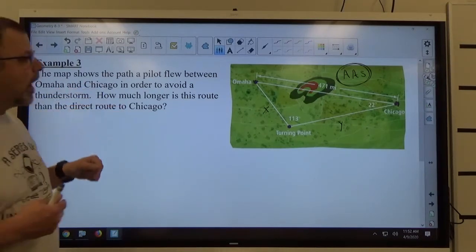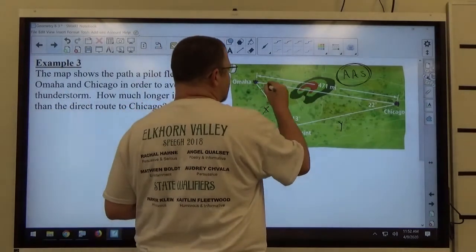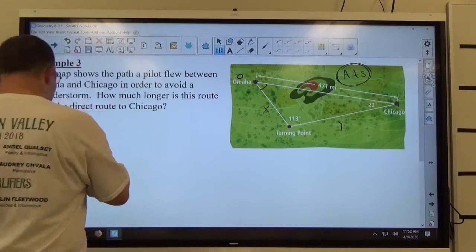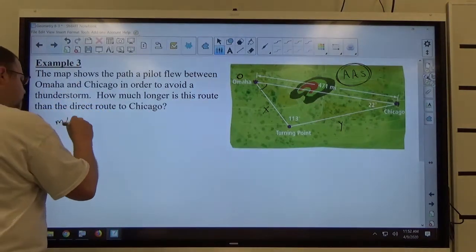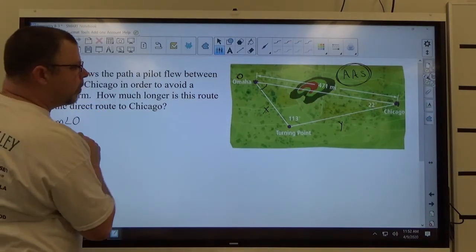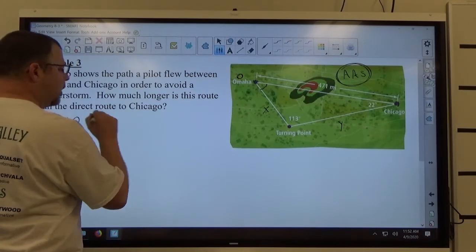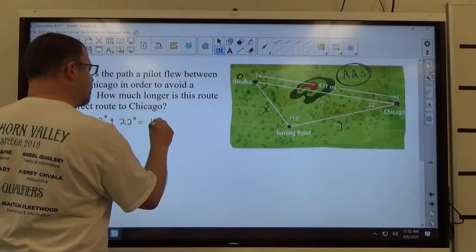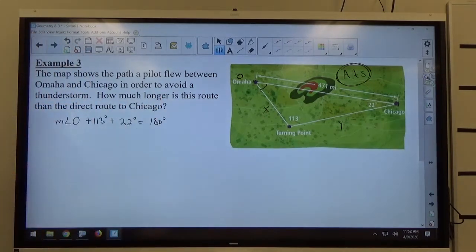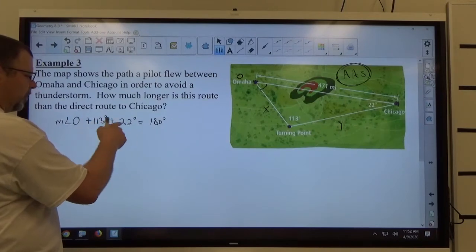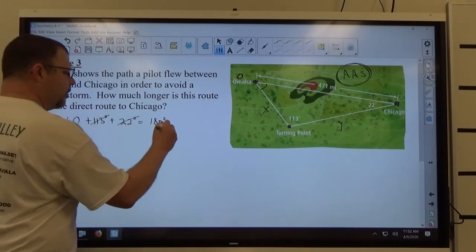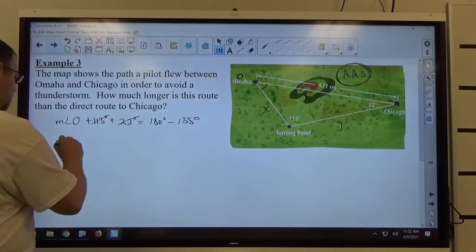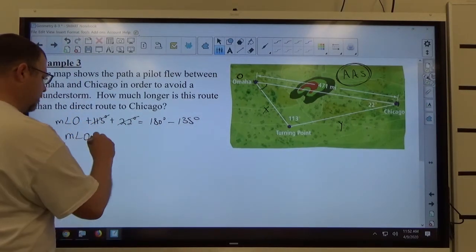I need to know the angle at Omaha. So let's just do this. I'm going to call it angle O to give it a name. So the measure of angle O plus 113 plus 22 should equal 180 degrees because, again, we have a triangle. 180 degrees in a triangle. 113 and 22 makes 135. So when I move it over, it becomes minus 135. And if I subtract, the measure of angle O becomes 45 degrees.